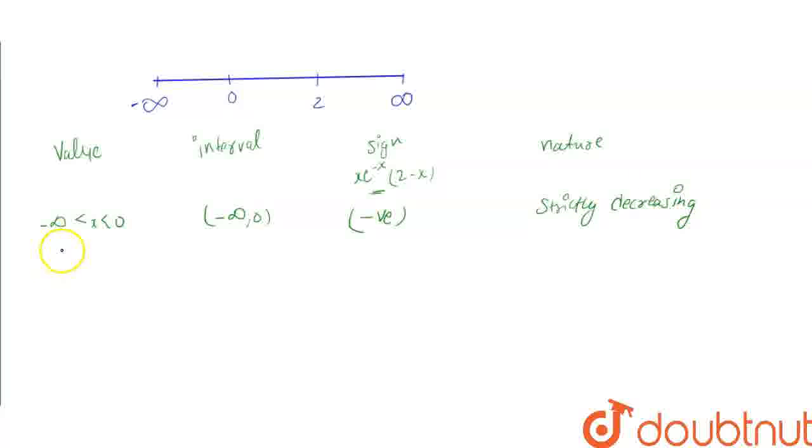Now for the interval (0, 2), if we take x = 1 which lies between 0 and 2: x = 1 is positive, e^(-x) remains positive, and 2 - 1 = 1 is also positive.